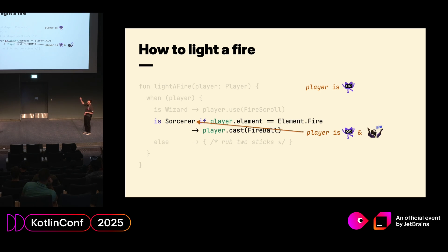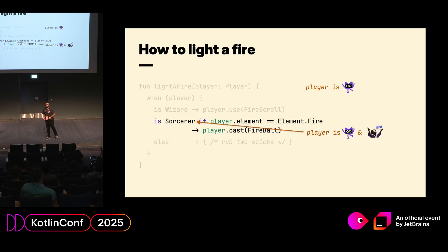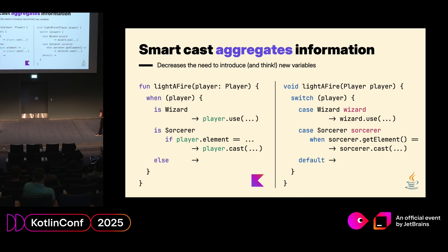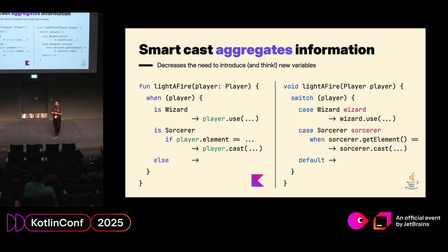Smart casting starts already there. There is an extra guard after the 'is' where we can access the element of the player, and element is something only available for sorcerers. So the compiler is knowing this fact at the very moment where we are sure the player must be a sorcerer. Kotlin is nice because it allows us to aggregate information without having to think about new variable names. In Java, using a similar construct like pattern matching, we need to introduce a new name for the wizard and a new name for the sorcerer. When we check that something is not null, we don't want to create a 'not-null name' — we just want to know that the name is not null.